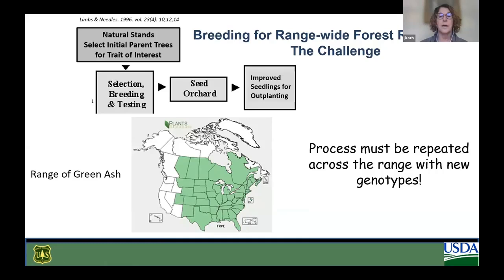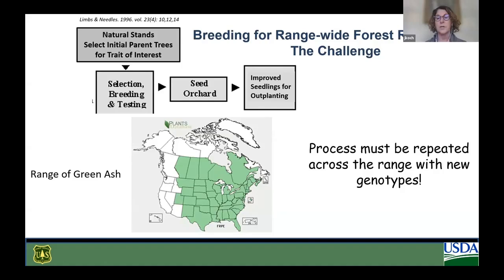The other iterative part of this process is the challenge of breeding for range-wide forest restoration, especially for very wide-ranging species like green ash and hemlock. You can't just collect parent trees from North Carolina and expect those seedlings to be appropriate to plant in Ohio. The process of identifying parent trees and establishing seed orchards to produce improved seeds has to be repeated across the entire range, with new genotypes appropriate to those areas.